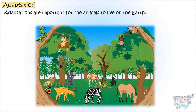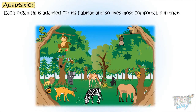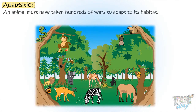Adaptations are important for the animals to live on Earth. Each organism is adapted for its habitat and so lives most comfortably in its habitat. An animal must have taken hundreds of years to adapt to its environment.